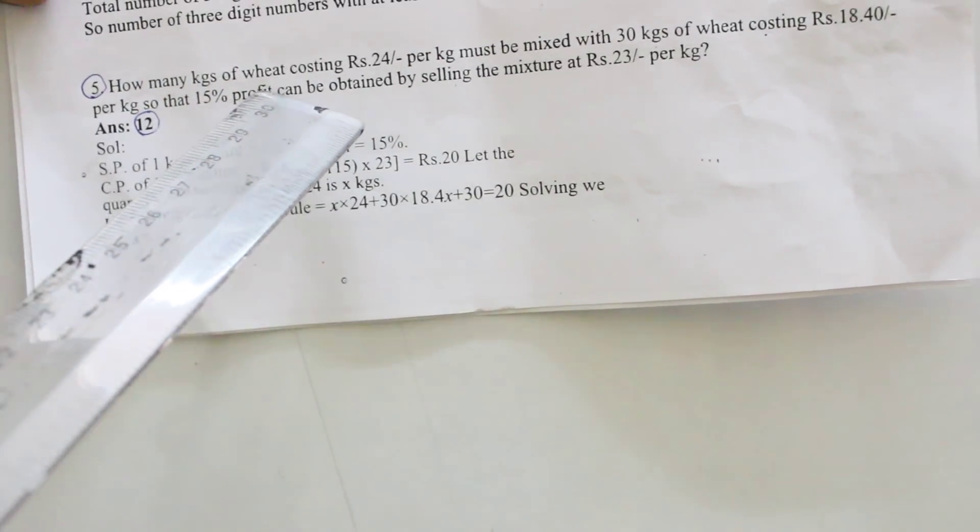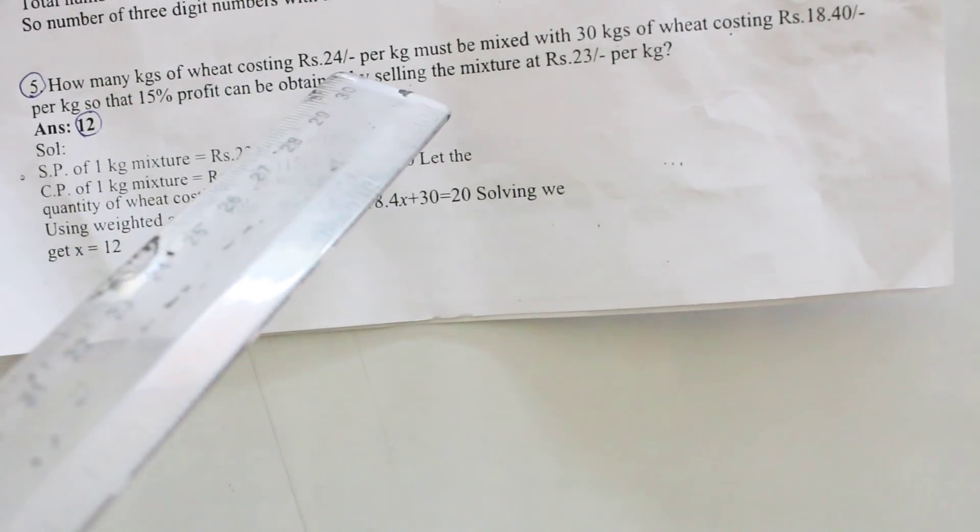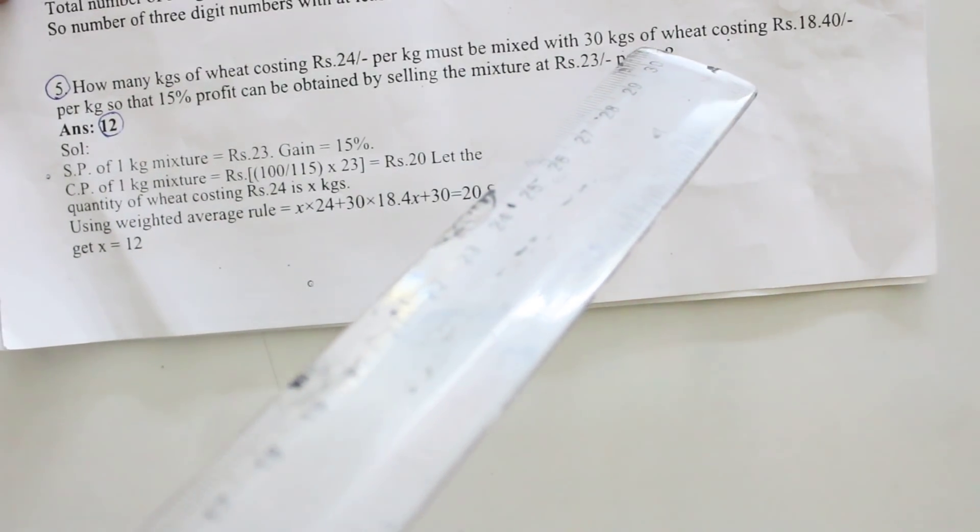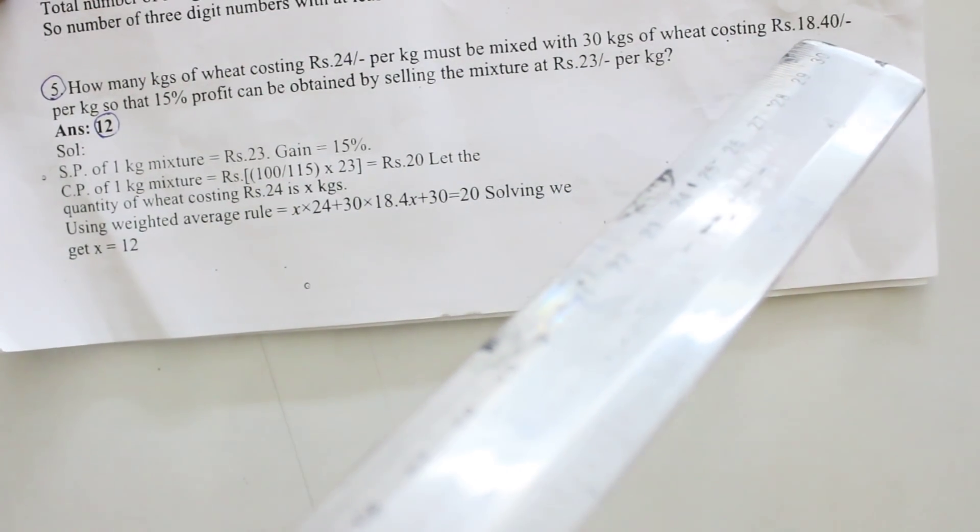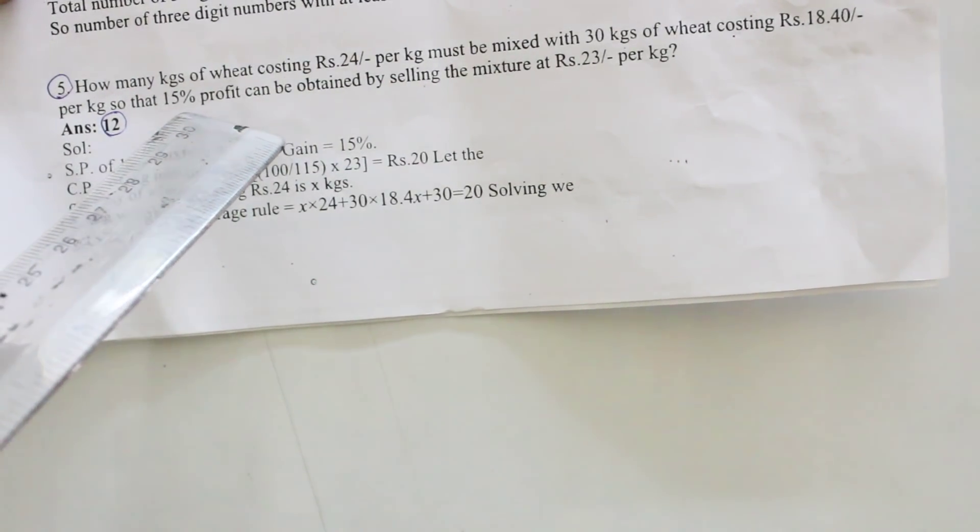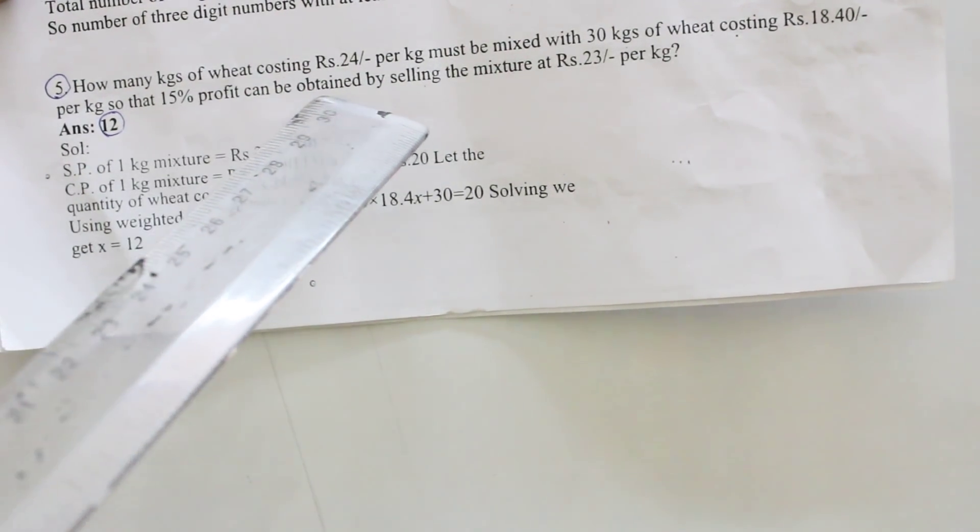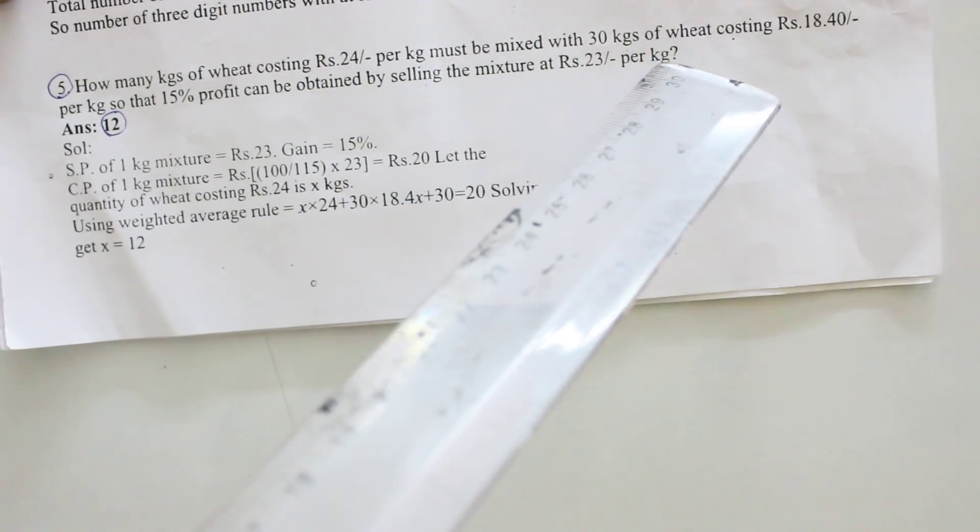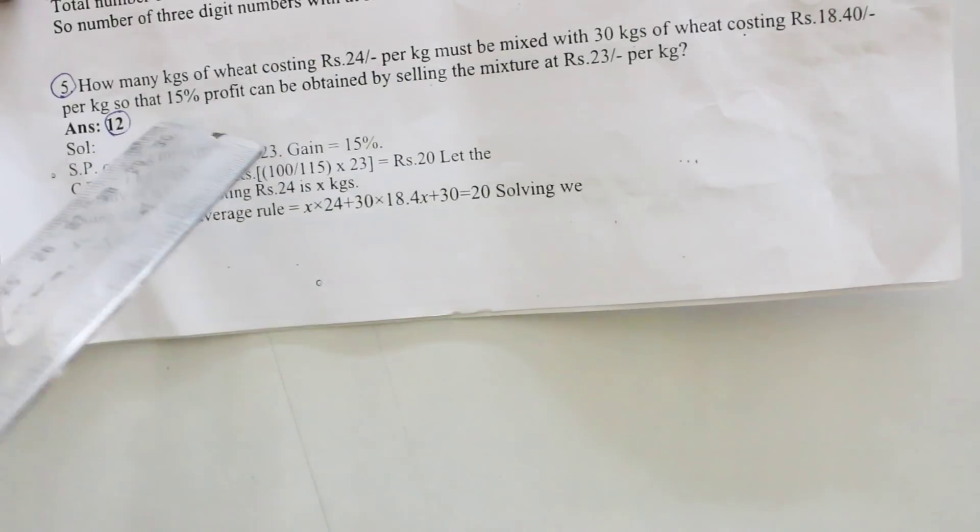Fifth question: How many cases of wheat costing 24 rupees per kg must be mixed with 30 cases of wheat costing 18.40 rupees per kg so that 15 percentage profit can be obtained by selling the mixture at 23 rupees per kg? The answer is 12 rupees.